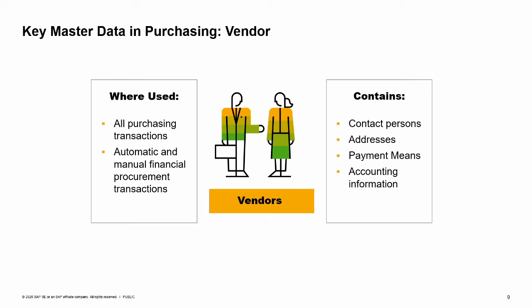Vendor data identifies who is supplying the goods and services. You use vendor master records in all purchasing transactions. The vendor is also used in automatic and manual financial procurement transactions. The vendor master contains contact person details and addresses.